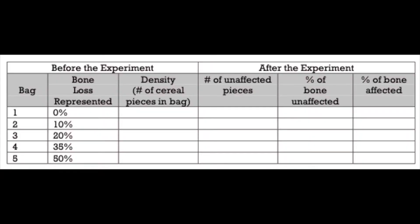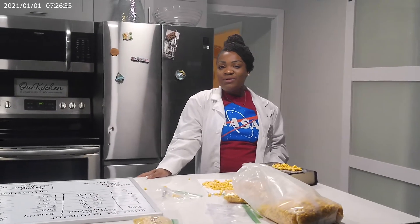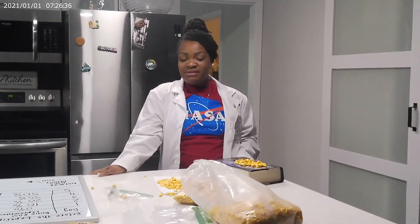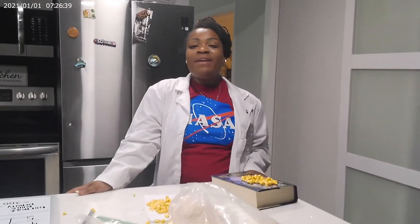Now try to complete the rest of the table on your own. Let's analyze our results. What happened as the amount of cereal decreased? What would happen if a real human bone was hit by a sudden powerful force? Did the results support your hypothesis? How can we prevent bone loss here on earth?